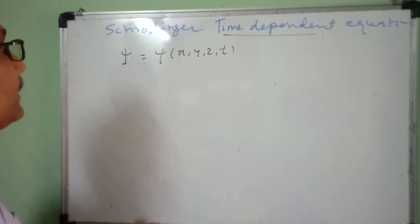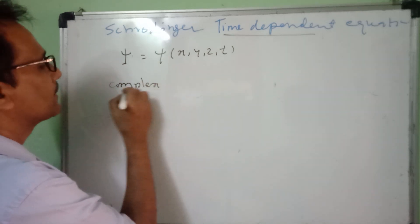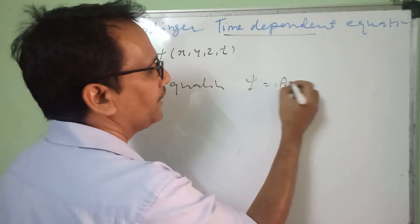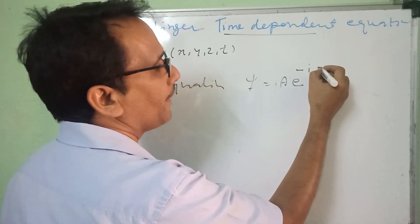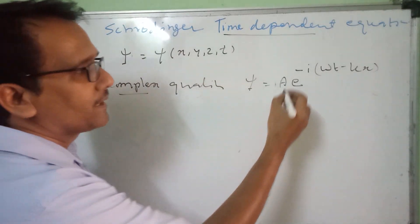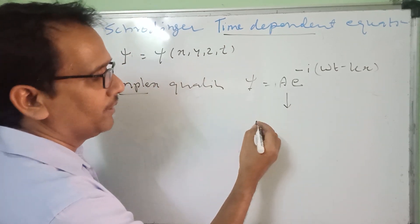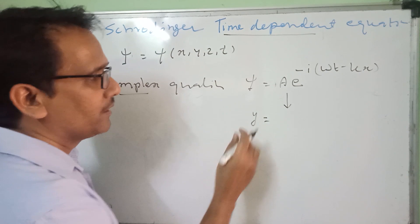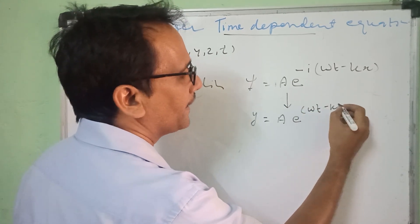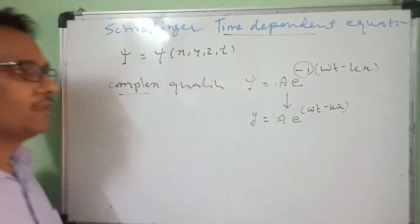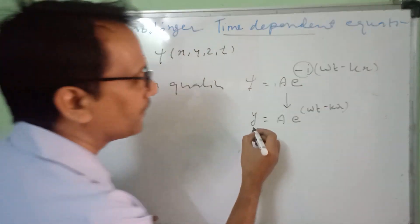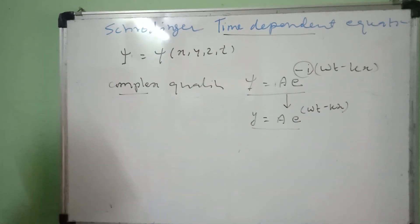This wave function psi is actually a complex quantity, represented as e to the power of minus i(ωt − kx). If you want to compare this with an ordinary progressive wave function y = A·e^(ωt − kx), the additional minus i imaginary term is introduced to convert y into psi. The ordinary wave represents a regular wave, while psi represents a matter wave.